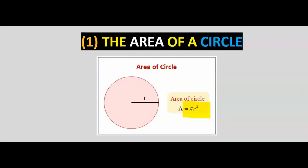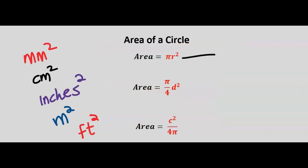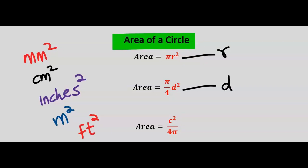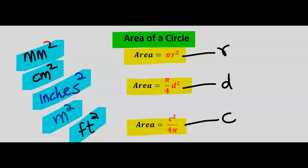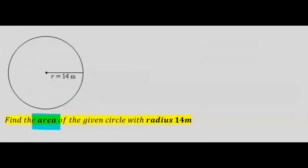Let's start with the area of a circle. Pi r squared is the most common known formula when finding the area of a circle, and this is when the radius is given. Other ways of finding the area of a circle are when the diameter is given and when the circumference is given. These two formulas are simply a modification of the first one. The units of area of a circle can be millimeters squared, centimeters squared, inches squared, meters squared, or feet squared — each will depend on the unit of the radius, diameter, or circumference.